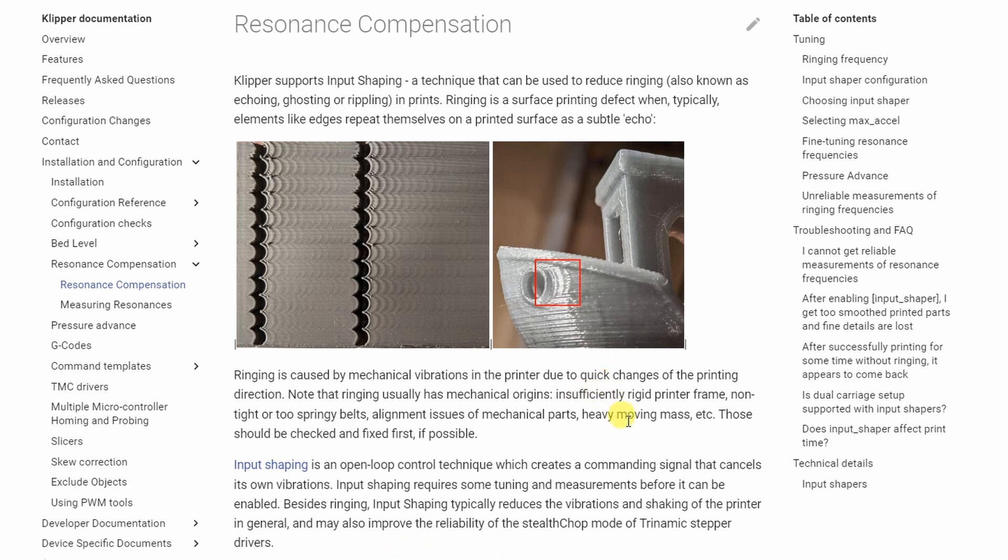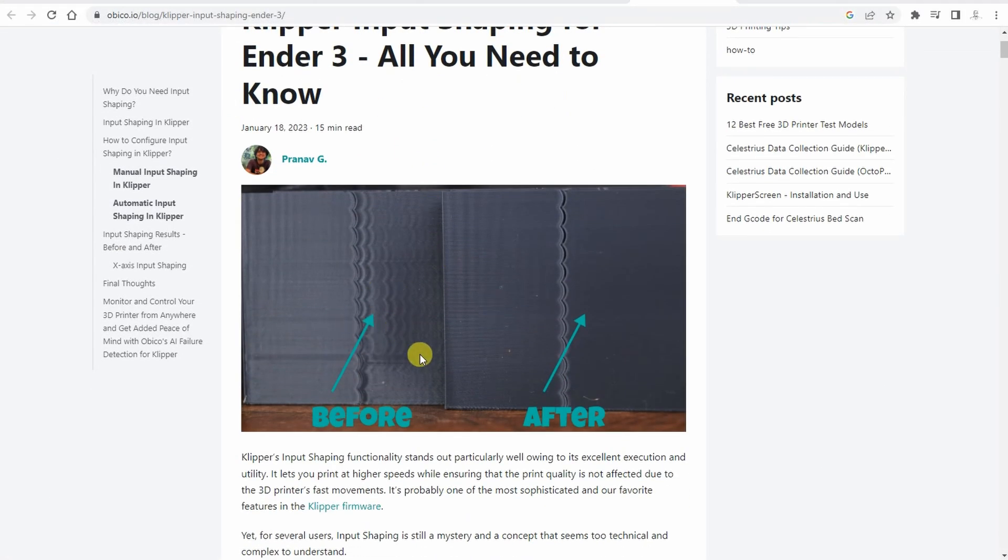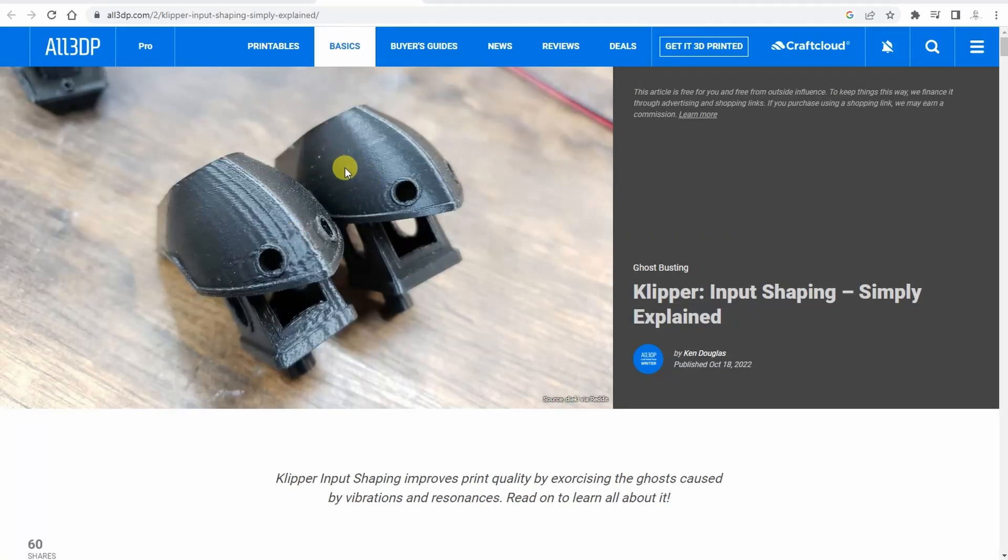Here you can see a few examples of how input shaping can improve print quality. On these pictures you can see an object with a lot of ringing and ghosting, and also you can see it with much nicer printing.